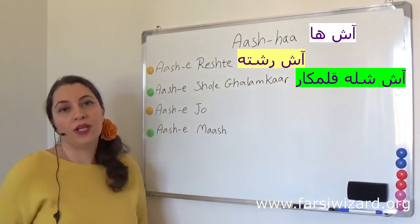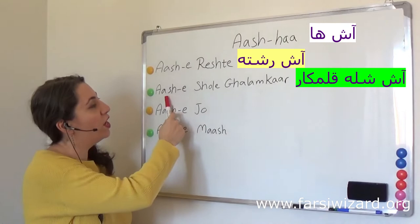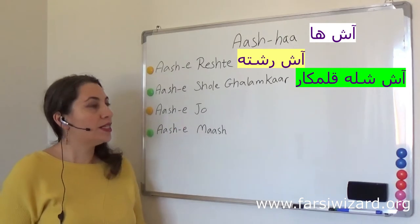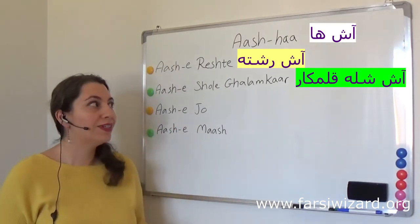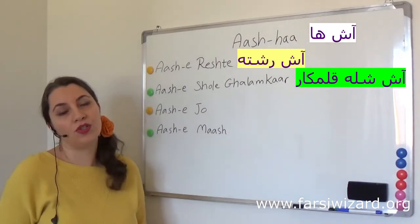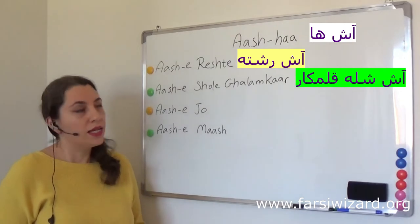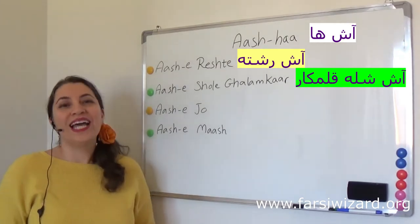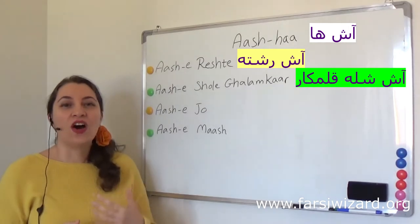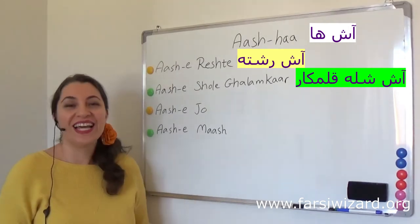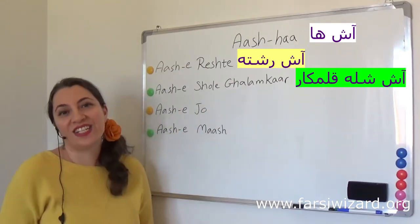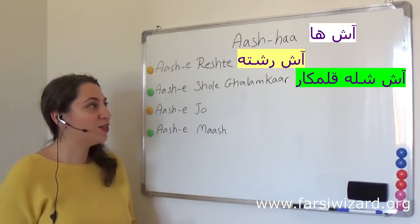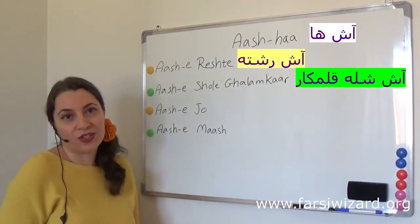Then we have Ash-e-Sholeh Qalamkar. This Ash is a combination of herbs and meat as well — it's one of the rare cases where you see meat in an Ash, as usually Ash is legume and herb based. Ash-e-Sholeh Qalamkar also has its own cultural significance, but it's funny to know that when a situation is a mess in Farsi we can say Ash-e-Sholeh Qalamkar, meaning it's such a mess. The reason is there are so many ingredients in it, and we associate it with complicated or messy situations — a metaphoric or figurative usage of the name of this Ash.